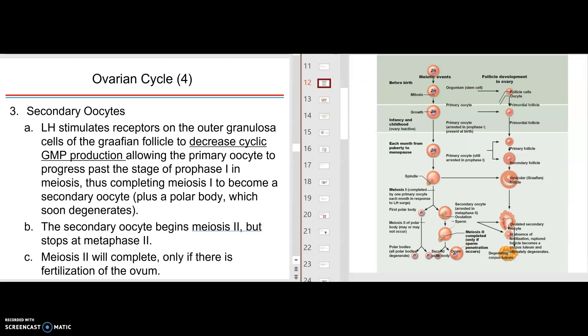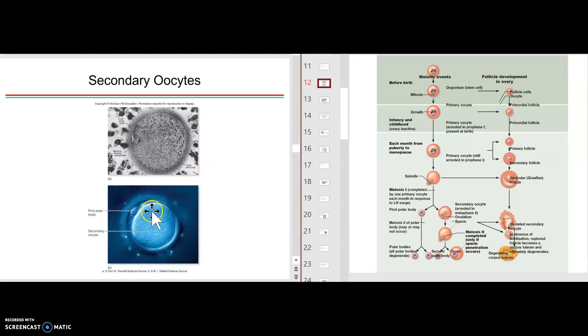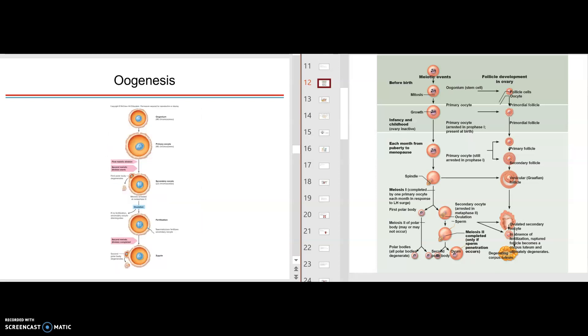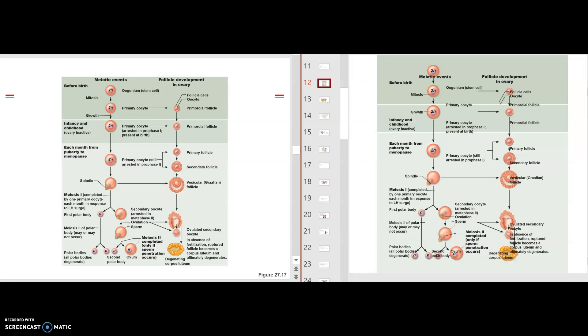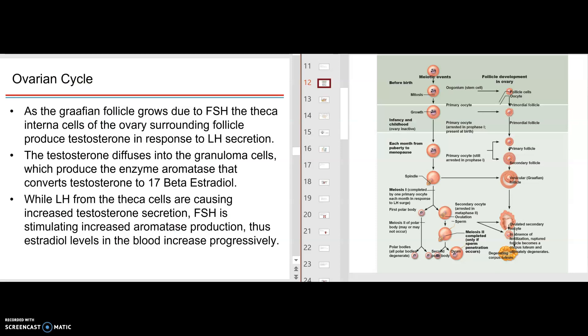So here is the zona pellucida surrounding that egg. Here's that first polar body right there, still within the surrounding of the zona pellucida, and here's the secondary oocyte right there, which would be this right here, and it'll go all the way to metaphase two. Okay, so then we go further. Here of course is that. Here's the same drawing that you see there.